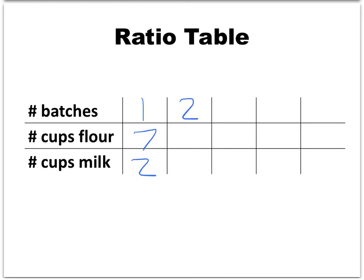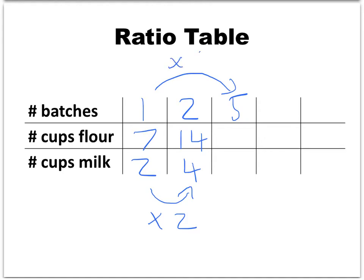Suppose we wanted to make two batches of muffins. If we're going to make two batches, then we're going to need twice as much flour, so we need 14 cups of flour, and likewise twice as much milk, so 4 cups of milk. To go from one column of this ratio table to another, we multiply by some number — specifically here, we multiplied by 2. Now suppose we wanted to make 5 batches. We need to multiply every number in the first column by 5: 7 times 5 is 35, and 2 times 5 is 10.